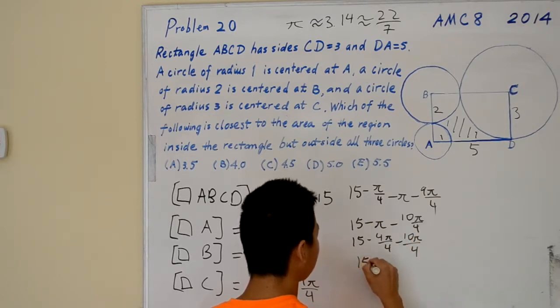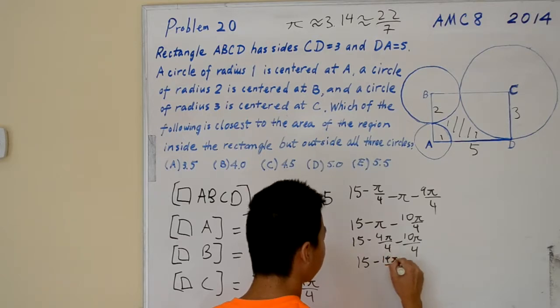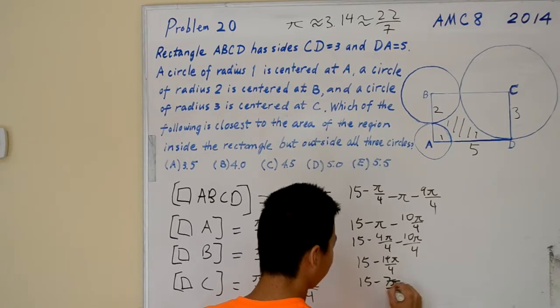15 minus 14 pi over 4, which simplifies to 15 minus 7 pi over 2.